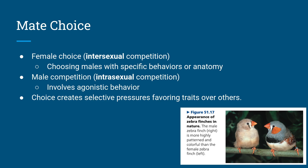Mate choice by females happens through intersexual competition — females usually try to choose males with specific behaviors or anatomy. Because of selection, whatever gets chosen is kept throughout the next generation. There's also male competition for females through intersexual competition, involving agonistic behaviors — different animals fighting each other, so males fight each other for the female. These types of mate choices create selective pressures that favor certain traits over others, determining which ones are kept and which are not.